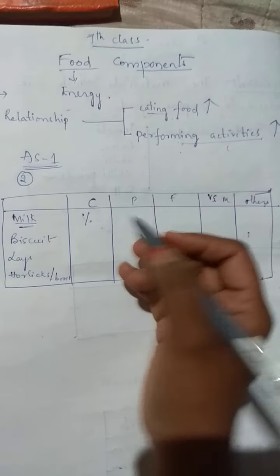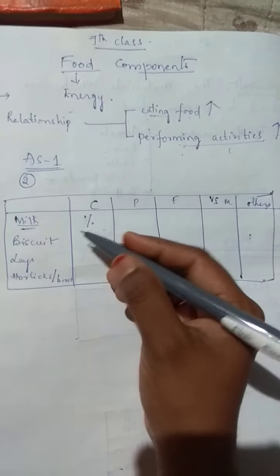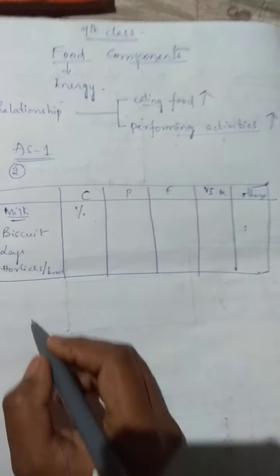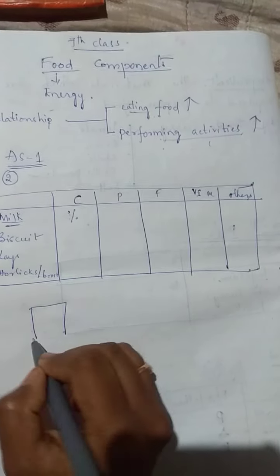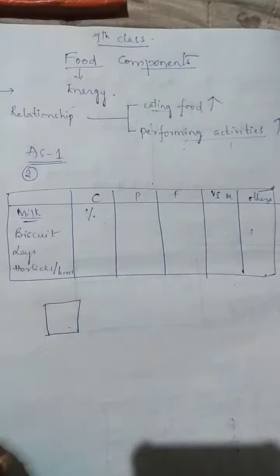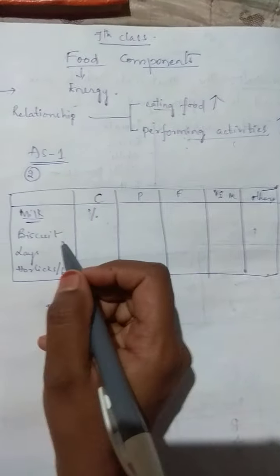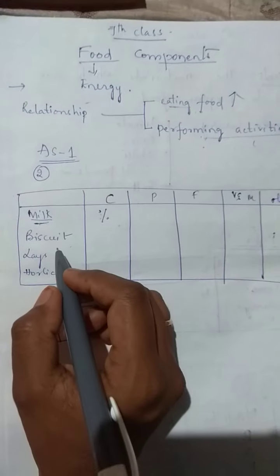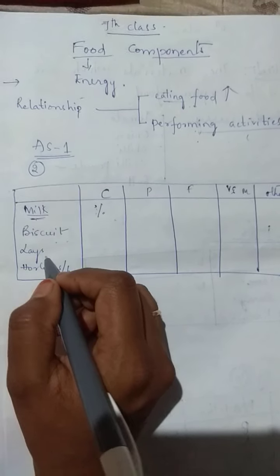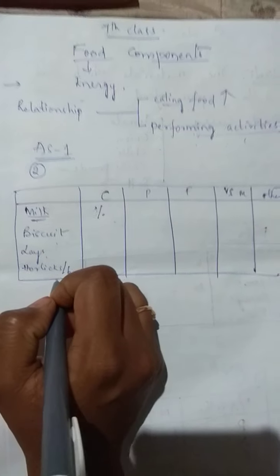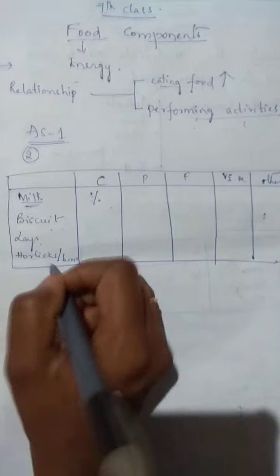On the back of the milk packet, in a box, it is written. Look at that - on the back of the milk packet, biscuit packet, lays packet, and Horlicks or Boost packet. This is your assignment for today.